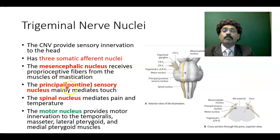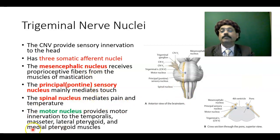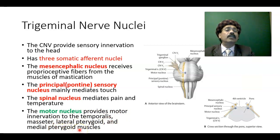The principal or pontine sensory nucleus mainly mediates touch. The mesencephalic nucleus extends from the midbrain to the pons. The spinal nucleus mediates pain and temperature — and we must note that pain, touch, and temperature always overlap. The motor nucleus provides motor innervation to the temporalis, masseter, lateral pterygoid, medial pterygoid, anterior belly of the digastric, mylohyoid, tensor veli palatini, and tensor tympani muscles.